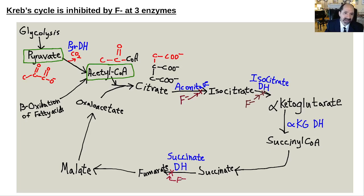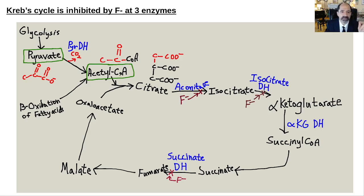Pyruvate and acetyl-CoA are right in the middle of all human energy production metabolism. Beta oxidation feeds in two-carbon acetate groups into acetyl-CoA, and pyruvate is decarboxylated to make acetyl-CoA. The key point is the Krebs cycle is blocked at three spots by F-minus, so you really can't make any energy when these sites are all blocked. The more F-minus there is, the less energy production a person can generate.